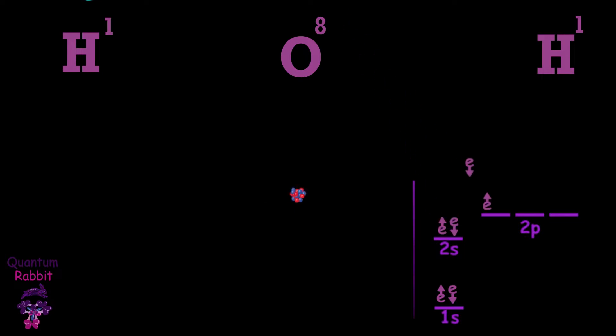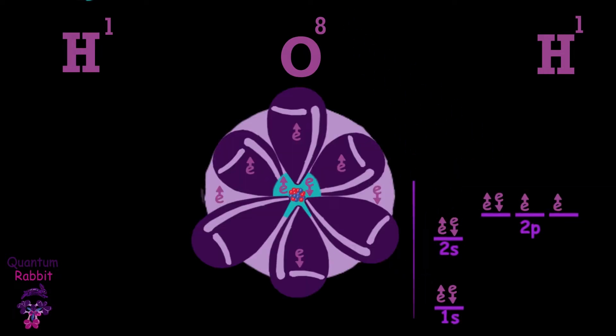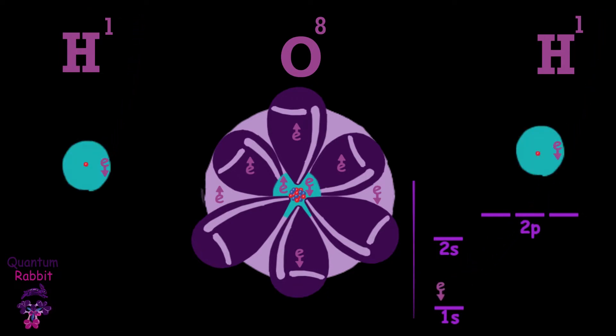The oxygen atom contains eight protons that attract eight electrons. When filling their orbitals, we notice that they lack two electrons to complete them. The hydrogen atom contains one proton and attracts an electron but lacks one electron to fill its orbital.